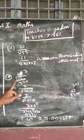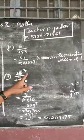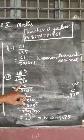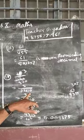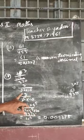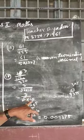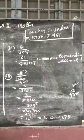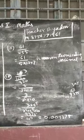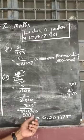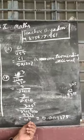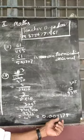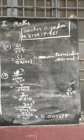15 upon 1600 becomes 3 upon 32 × 10, which can be written as 3 upon 2 to the power 5 × 10. By multiplying 5 to the power 5 in numerator and denominator, it becomes 9375 upon 10 to the power 6, which can be expressed as 0.009375.